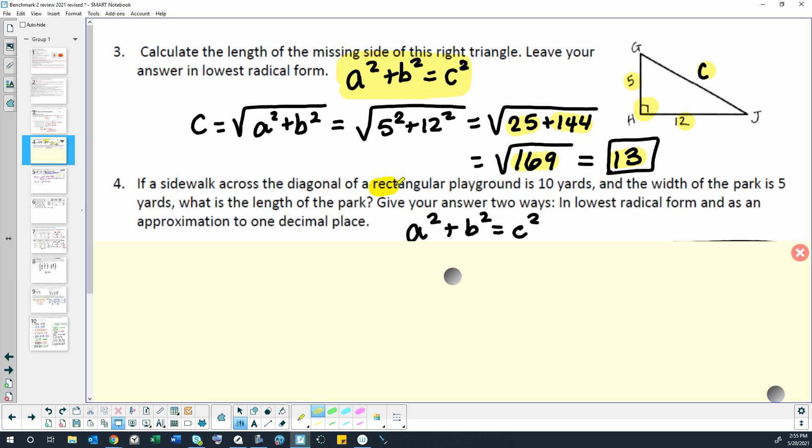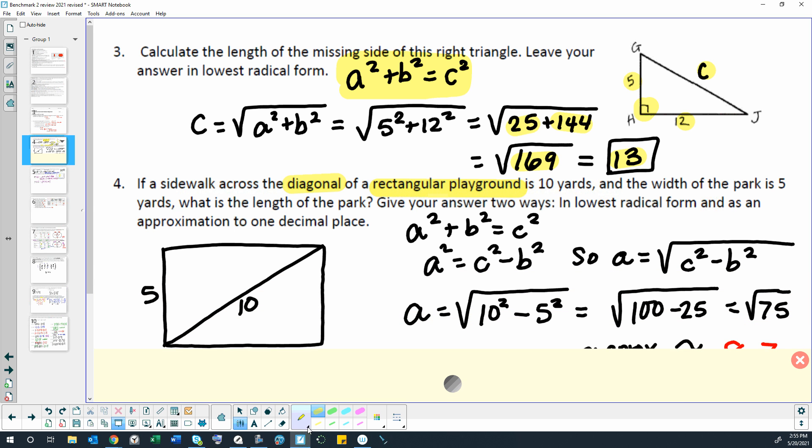This is going to require Pythagorean theorem because we have a rectangular playground and a diagonal. If you take a rectangle and you draw a diagonal through your rectangle like we have here, you end up with a right triangle and 10 would be the hypotenuse. This is the sidewalk and it is 10 yards, as I've labeled in my picture. The width of the park is 5 yards, so that's this number here. What is the length of the park? We're trying to find the length of our park this direction. That's just one of the legs of our right triangle.